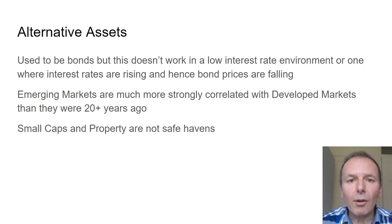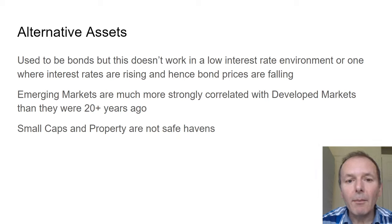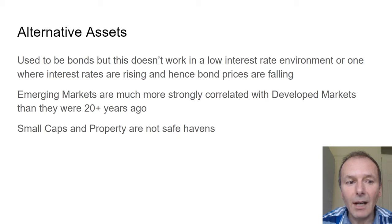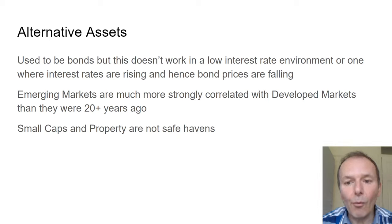So what alternative assets to a global tracker should you use? Well, it used to be bonds, but this doesn't work in a low interest rate environment because the returns on bonds would be very low, or in environments where interest rates are rising and bond prices are falling. So we don't really bother with bonds or debt at all.